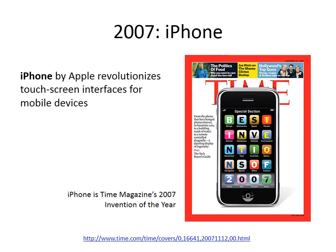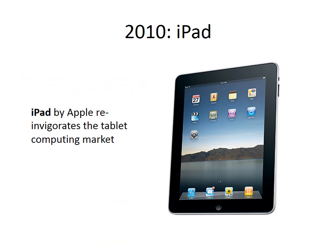After introducing the world to the GUI in 1984, Steve Jobs and Apple had another huge breakthrough in 2007 when they introduced the iPhone. Although touchscreen interfaces had existed before this, the iPhone made them popular for smartphones, and every smartphone manufacturer has followed Apple's lead. Two years later, Google introduced the Android operating system, which is currently the iPhone's biggest rival. Three years after that, Apple reinvigorated the tablet market by bringing their touchscreen operating system to the tablet. There are now many tablets running Android, Windows, and other operating systems, and tablet sales were expected to eclipse PC sales in 2015.